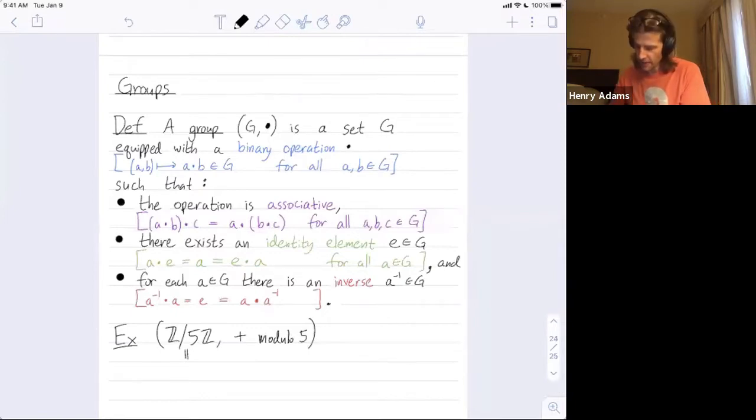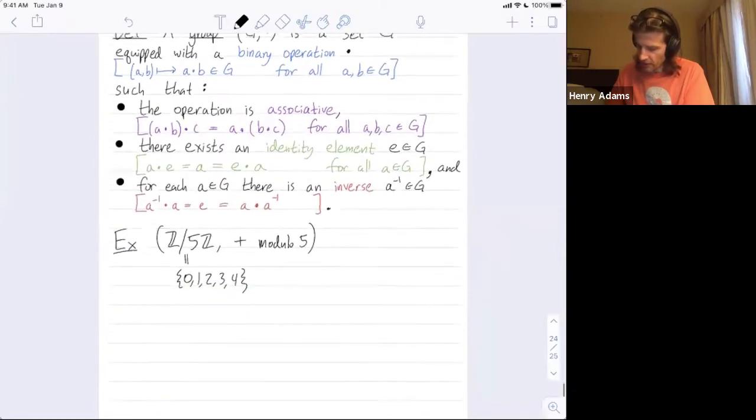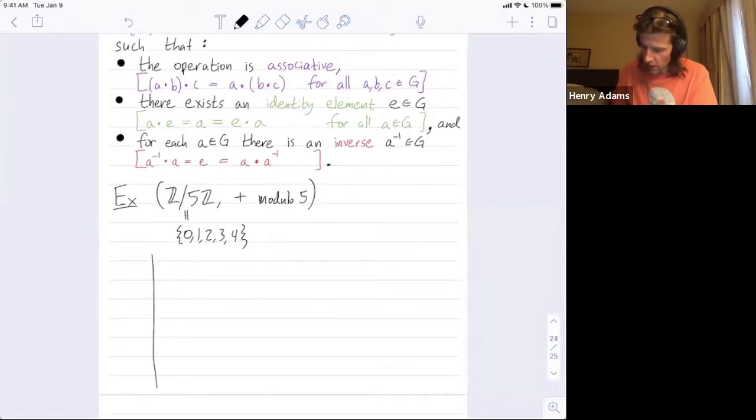Z mod 5Z is a set, and its elements are just 0, 1, 2, 3, and 4. And then addition mod 5, I add two numbers, and then if I get something 5 or larger, I just take their remainder after dividing by 5. So if I add 1 and 1, I get 2. If I add 2 and 2, I get 4. If I add 2 and 3, I get 5. But that's not an element here. So I take its remainder after dividing by 5, and I get 0. So 2 plus 3 is 0. 3 plus 3 is 6, but I take its remainder after dividing by 5, and I get 1. So let me illustrate this operation for you.